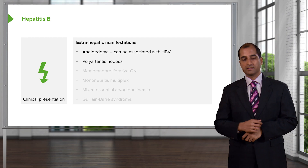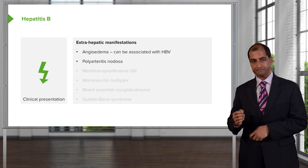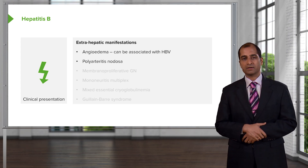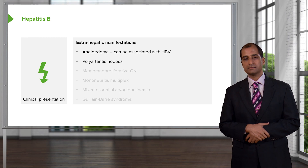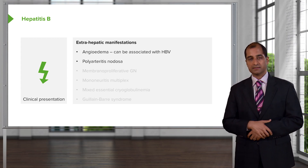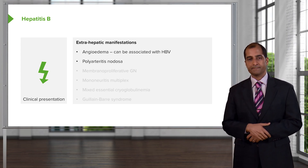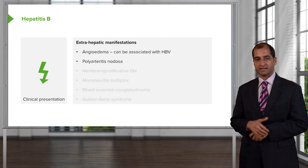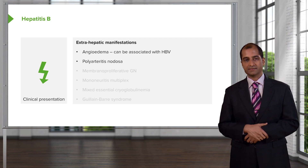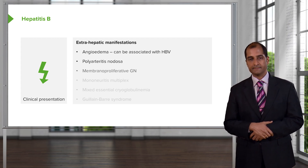In addition, the renal blood vessels may start undergoing microaneurysms and may result in hematuria. Keep that in mind. Spend a moment on polyarteritis nodosa and its association with hepatitis B.